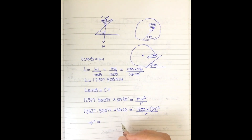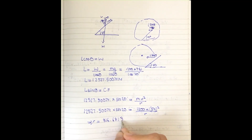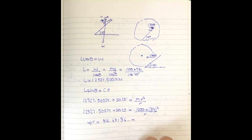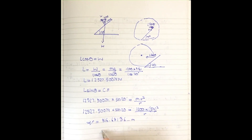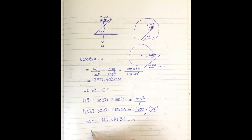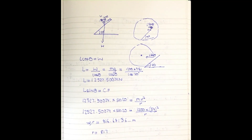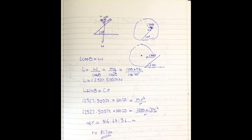Solving for the radius gives approximately 816.7 meters. Looking at the significant figures in the question — values are given to two or three significant figures — we can round to 817 meters. Since no decimal places are given in the original data, we round off appropriately. The final answer is 817 meters.